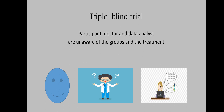In triple blind trials, the participant, the doctor, and the person who is analyzing the data are all unaware of the groups and the treatment. The ideal in randomized control trials are the triple blind trials, but most of the time double blind trials are conducted.